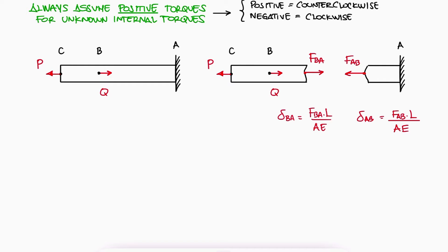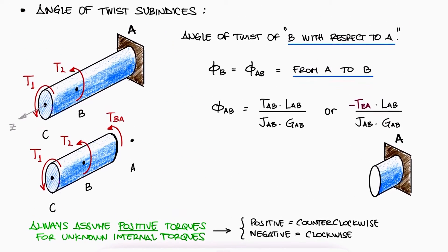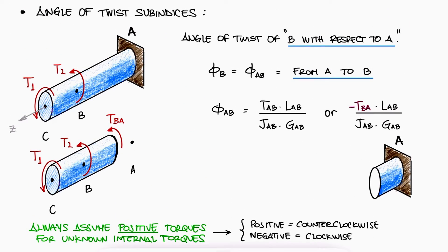In the case of internal torques, the assumption is that they are always positive. There is no tensile or compressive notion, so this means that both TAB and TBA are going to be assumed positive. Of course, their final number value will have a negative sign for one of the two.